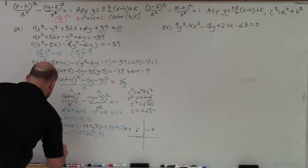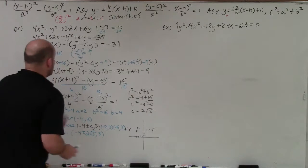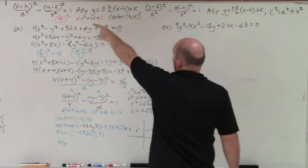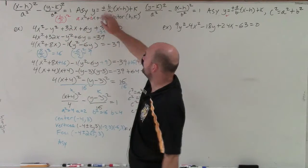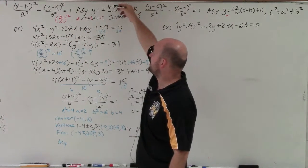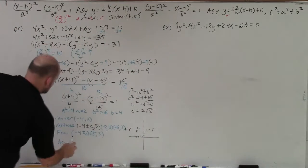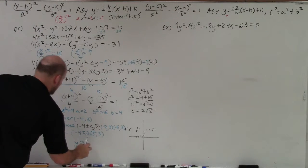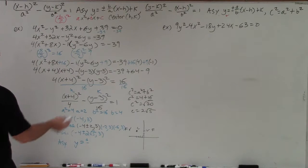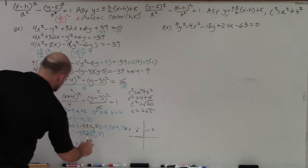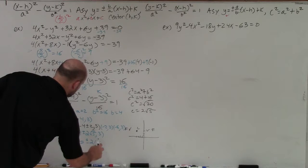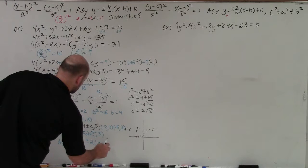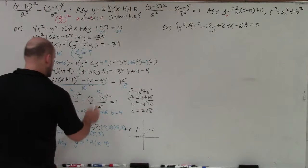The last one is the asymptote. Since we're using a horizontal transverse axis, I plug in b, a, h, and k into the equation: y = ±(b/a)(x − h) + k = ±(4/2)(x − 4) + 3 = ±2(x − 4) + 3. And there you go.